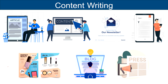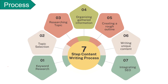Here is the 7-step process of content writing. The process begins with keyword research. After that, selection of the topic for creating content takes place, which is followed by researching the topic — for which the writer goes through different sources like books, PDFs, videos, websites, newspapers, images, etc. Once the information is collected, organization of the gathered information takes place, which is followed by creation of a rough outline or draft.